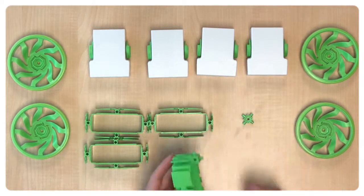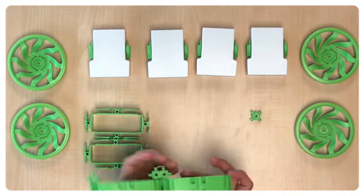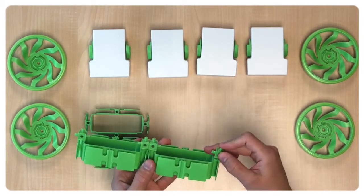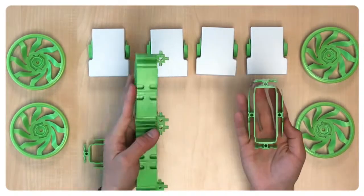Now we grab another jacket and we attach to the six side connector as well. Then we get the last four side connector and attach to this second jacket. Now we get the last two jackets and we finish the structure of our rover.